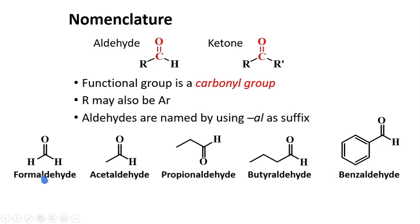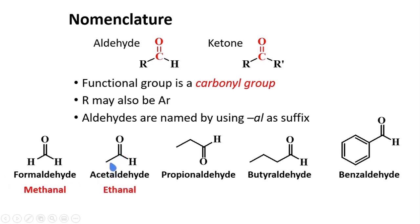With regards to the IUPAC names, we name aldehydes by using '-al' as a suffix in place of the '-e' at the end of the alkane name. Thus formaldehyde can be named methanal. Acetaldehyde is ethanal because it contains two carbons. This is named propanal because it contains three carbons. This one you may be able to name by yourself.